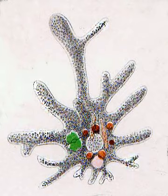Lobosa is a taxonomic group of amoebae possessing broad, bluntly rounded pseudopods. In current classification schemes, it is a subphylum of amoebozoa, composed of amoebae that have lobose pseudopods but lack cilia or flagella. The group was originally proposed in 1861 by William B. Carpenter, who created it as a taxonomic order containing the single-family amoebina.